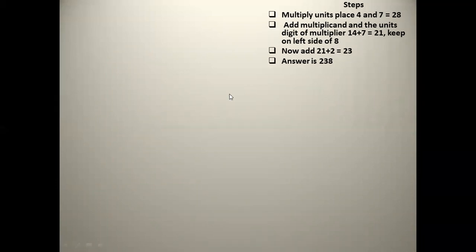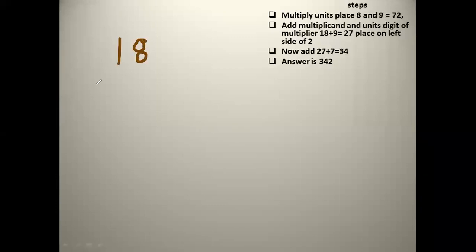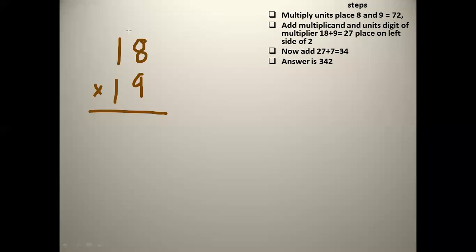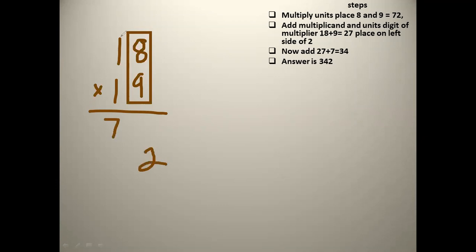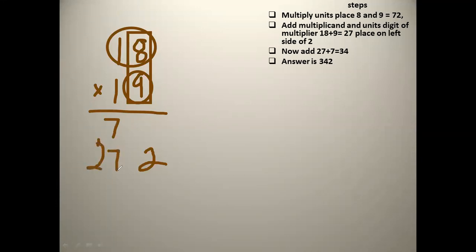Our next example is 18 times 19. First, we multiply the units place: 8 and 9 give the answer 72. We arrange the digits like this. Then in the second step, we add the multiplicand 18 with the units place of the multiplier, which is 9. So 18 plus 9 gives us 27. Then we add 27 plus 7, which gives 34, and bring down the 2. So 342 is our answer. 18 times 19 equals 342.